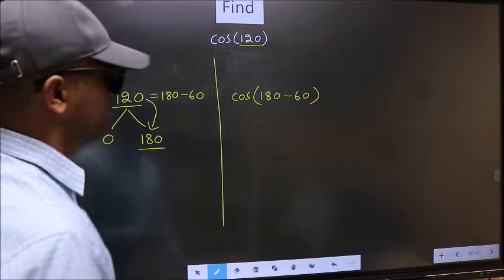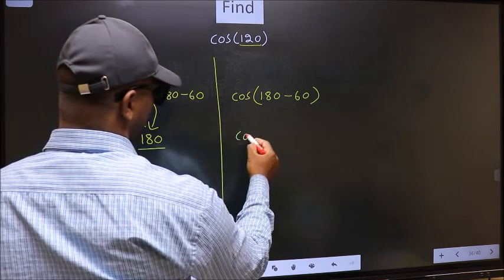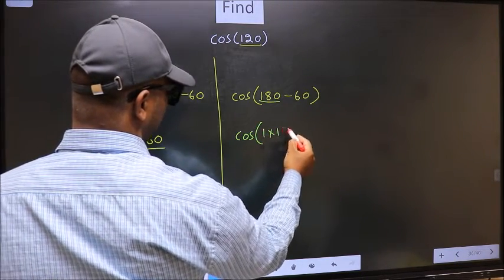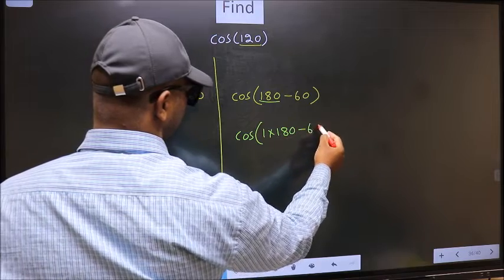Next, cos—in place of 180, now I write 1 times 180, minus 60.